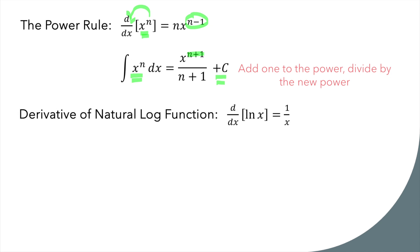The derivative of a natural log function. If you take the derivative of ln of x, you get 1 over x. If you take the antiderivative of 1 over x dx, you get ln of x plus c. Don't forget the plus c.